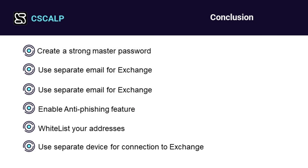Conclusion. Keeping your exchange accounts secure is an important consideration. We went through some of the simple steps you can take to protect your account and keep hackers from accessing your precious bitcoins and altcoins. If you would like to check your current security level, follow the security dashboard. If you are using the exchange app, go to the security section of your account tab and set up all the settings you would like. Press like, subscribe to our channel, and be safe.